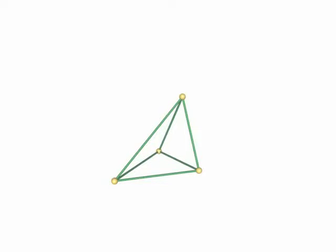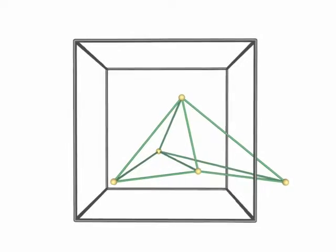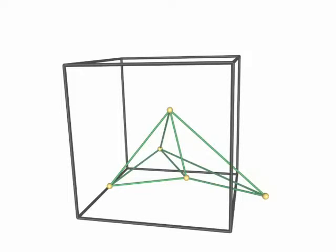In R3 a tetrahedron is uniquely defined by four points. However, this is not true in periodic space, because we have several possibilities of choosing periodic copies of the given points. Therefore, we have to equip the vertices of a tetrahedron with additional information.